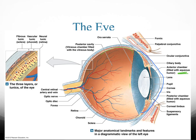The anterior cavity is going to have two compartments within it: what we call a posterior chamber and an anterior chamber. The posterior chamber and anterior chamber are divided by the ciliary body and the iris. But through both of these compartments we're going to have aqueous humor circulating.